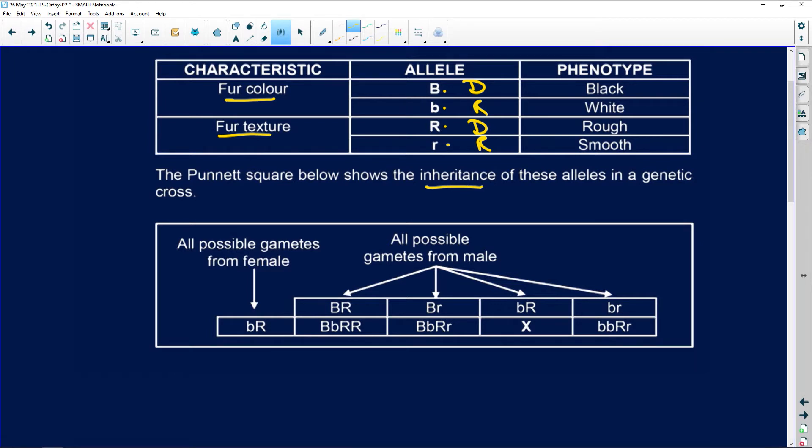So here we've got all the possible gametes from a male. Just looking at the male, you've got a capital B, a capital B, a lowercase and a lowercase, which means that this male is heterozygous for color, which means he's going to be black because black dominates. And if you look, he's got a capital R, a lowercase r, capital R, lowercase r. So he is also heterozygous for fur texture, which is going to make his fur rough. So it's a black color and rough texture. Why? Because those are the dominant alleles.